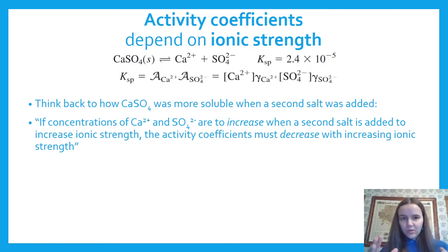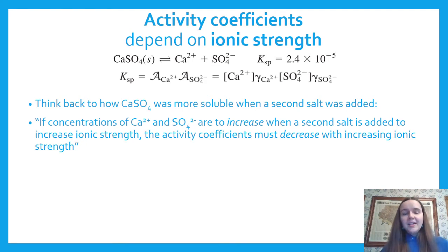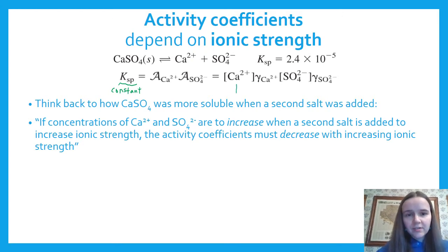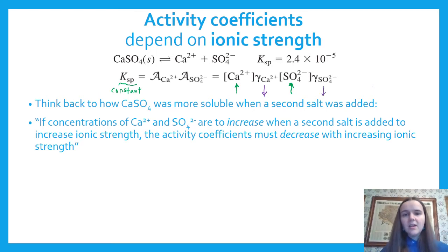The magnitude of the activity coefficient depends on ionic strength. Activity coefficients will be less than one. Going back to calcium sulfate being more soluble with a second inert salt: Ksp is a constant, so it can't change. We know the concentrations of both calcium and sulfate increased. In order for that to occur and still equal a constant, the activity coefficients have to be smaller — they decrease to offset the rise in concentration.